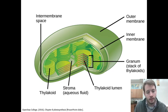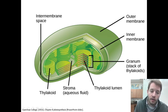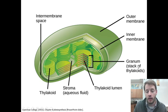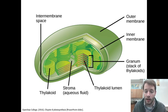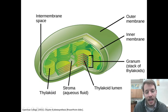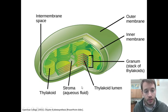Within a chloroplast, you can see that there are stacks of thylakoids. One stack of thylakoids is called a granum. If you have multiple granum, then it's called grana — grana being the plural term for granum. All of the grana are attached in an intricate arrangement, and they are surrounded by an aqueous, water-like fluid called the stroma.